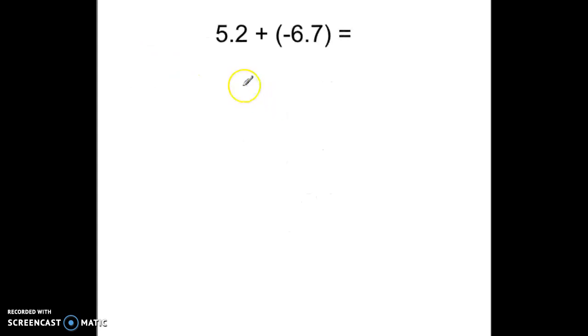Okay, going to our last example. I have 5.2 and negative 6.7. In this case, 6.7 has the greater absolute value. Now I notice that the signs are different, so I'll be subtracting. 6.7 minus 5.2. When I do that, I get a 5 and I get a 1.